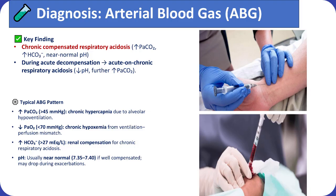Arterial blood gas analysis in OHS typically reveals chronic compensated respiratory acidosis, characterized by elevated arterial carbon dioxide, increased bicarbonate from renal compensation, and a near-normal pH. During acute decompensation, an acute-on-chronic respiratory acidosis develops with a fall in pH and further carbon dioxide retention. When compensation is adequate, pH remains between 7.35 and 7.40, but drops during acute exacerbations.